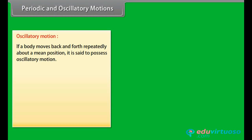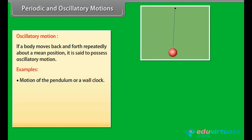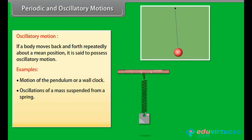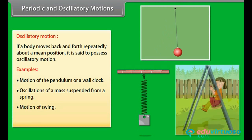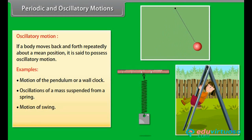Oscillatory motion: if a body moves back and forth repeatedly about a mean position, it is said to possess oscillatory motion. Some examples are: motion of the pendulum of a wall clock, oscillation of a mass suspended from a spring, and motion of a swing.